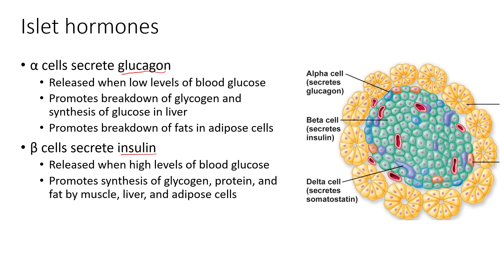Insulin is secreted by beta cells in the opposite situation from when glucagon is released. Insulin is released when levels of blood glucose are high, such as right after a meal high in carbohydrates. Insulin has the opposite role of glucagon — it's more for energy storage and uptake. Insulin helps cells take up glucose from the blood, and promotes the synthesis of glycogen, protein, and fat by muscle, liver, and adipose cells.